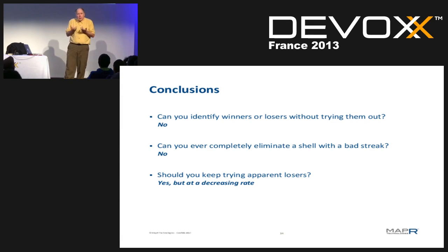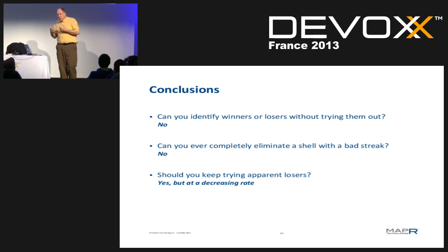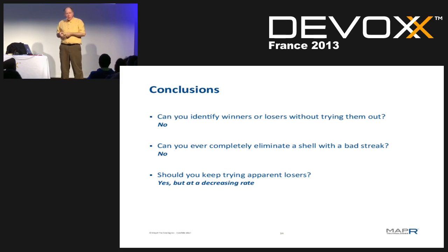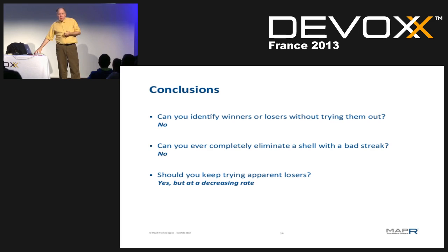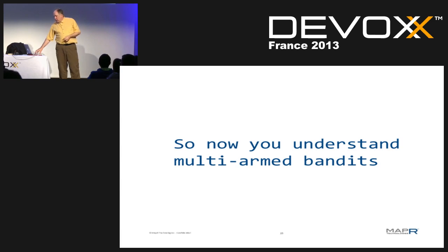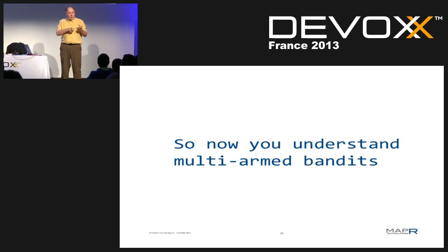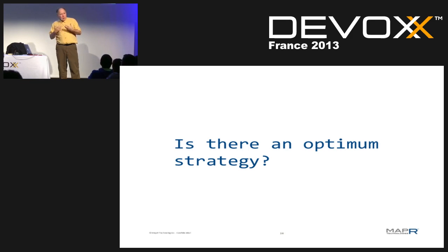We have a few conclusions. Can you identify winners or losers without trying something? No. You have to play to win, you have to play to learn — you have to try the shell you've never tried, even though you might have something that's looking pretty good. Can you ever completely eliminate a shell? It could just be bad luck. Should you keep trying the apparent losers? Yes, because they might be winners. Now you understand this problem at an intuitive level, and it's the same problem as the website, just a little bit simpler.